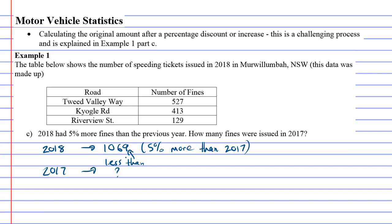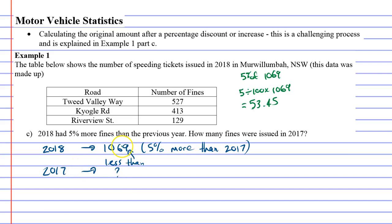I'm going to do it wrong first on purpose in green — the exact way that most people do it incorrectly. What they do is calculate 5% off 1,069: 5 divided by 100 times 1,069 equals 53.45. Then they go, if 2017 is 5% less than 2018, we just take that off: 1,069 minus 53.45 equals 1,015.55, and they put that as their solution.